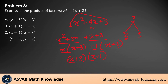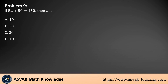Problem number nine: if 5a + 50 equals 150, what is a? Solve the equation: subtract 50 from both sides, giving 5a equals 100. Then divide both sides by 5, and 5 cancels out, giving a equals 100 divided by 5, which is 20. The final answer is a equals 20.